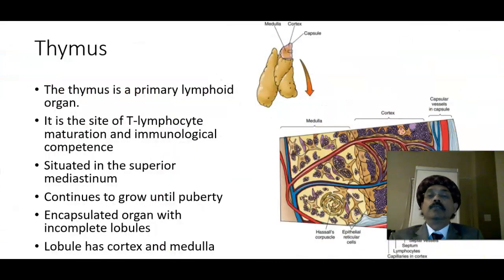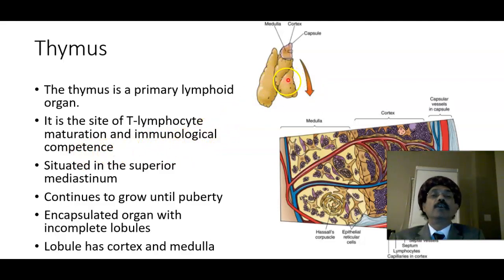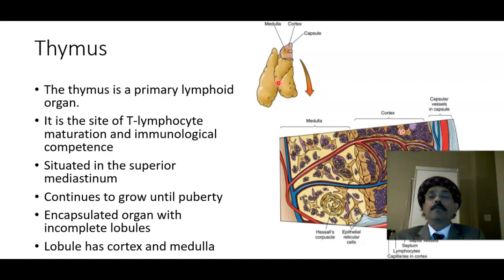The thymus is a primary lymphoid organ and the site of T lymphocyte maturation and immunological competence. It is present in the anterior and superior mediastinum, just behind the manubrium sternum or behind the upper part of the body of the sternum.